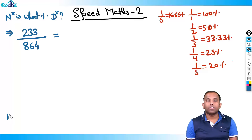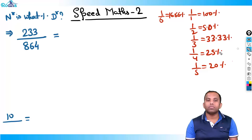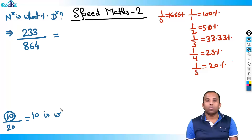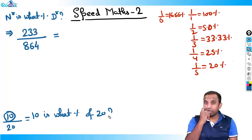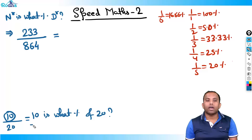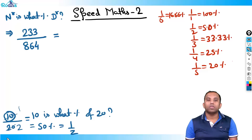Take a simple example: 10 by 20. What does this mean? It means 10 is what percent of 20. I know that 10 is half of 20, and half is 50%. That's exactly what you get after cancelling: 1/2. So 10 is 50% of 20.